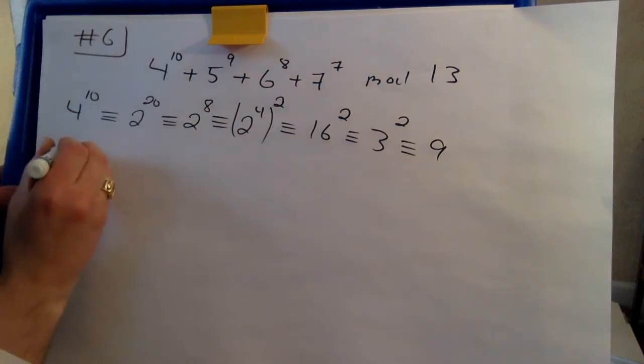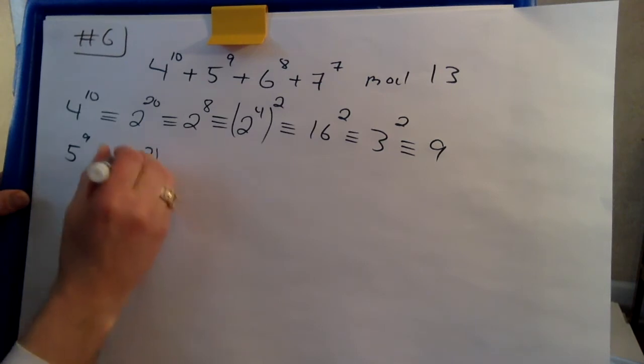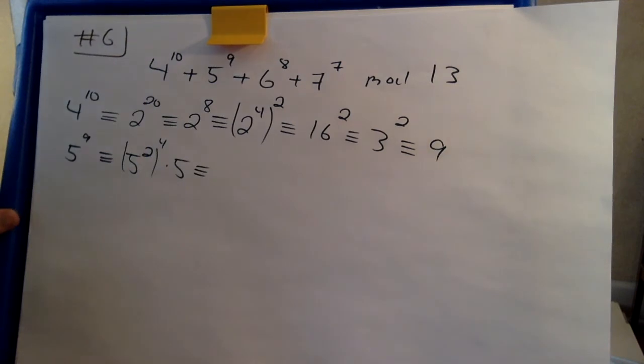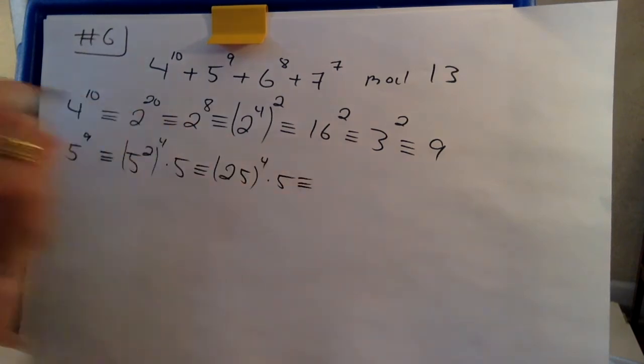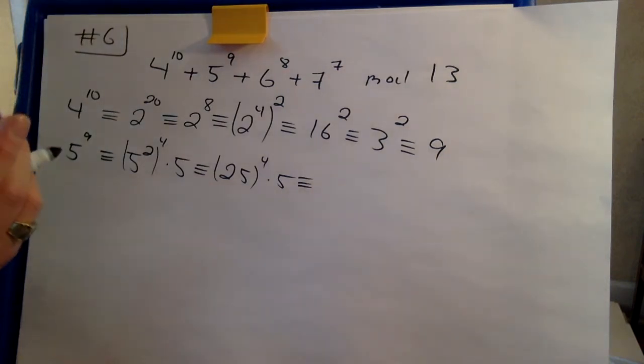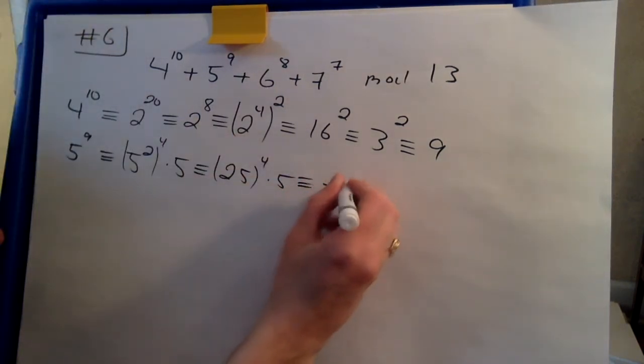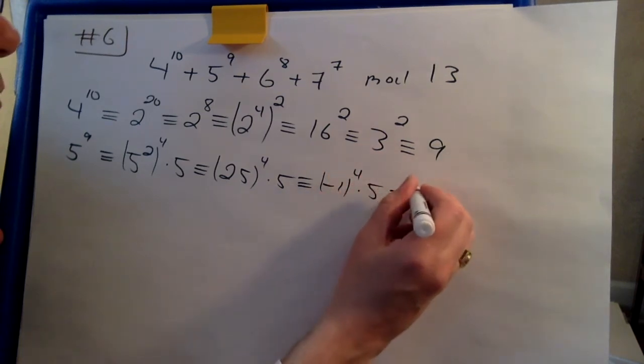Okay, next term. 5 to the 9. Well, it's 5 squared to the 4th power and then we have one more factor of 5. 5 squared, you know what that is. That's 25. 25 modulus 13, well that's 1 less than 26, half the cards in the deck. So here we have minus 1 to the 4 times 5 and that's of course just 5.